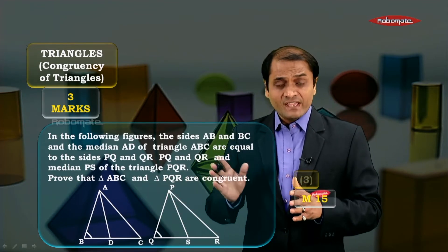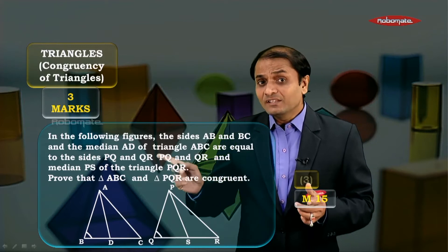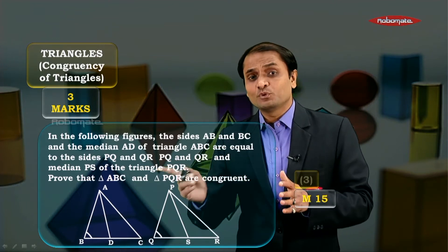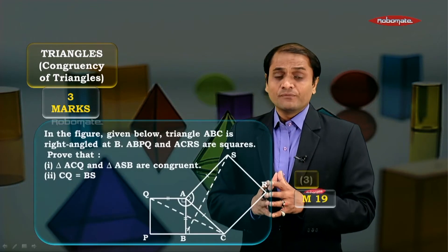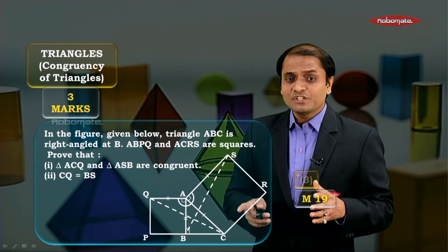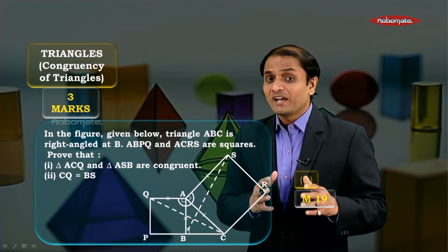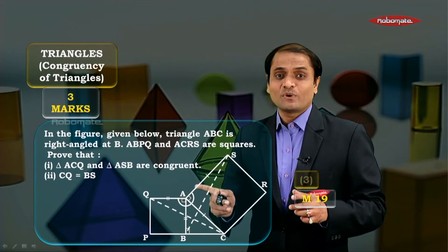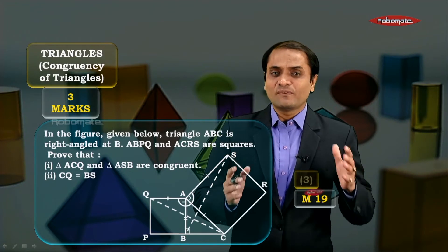This very important question is in module number 15. There are two triangles where two sides of the first triangle are equal to the corresponding two sides of the second triangle, and the median of the first triangle is equal to the median of the second triangle. Using the equality of medians, you have to prove that the two triangles are congruent. Also, in the next figure — module number 19 — you have to prove that triangle QAC and triangle BAS are congruent by SAS test, by first proving that angle QAC is equal to angle BAS.